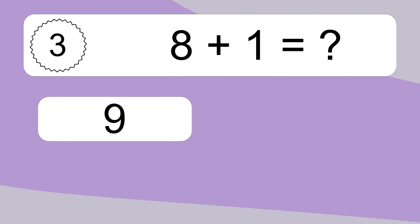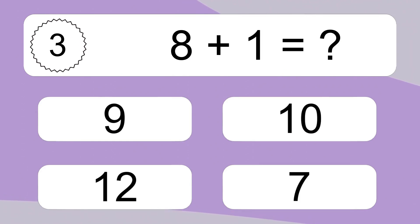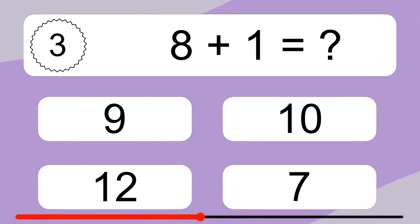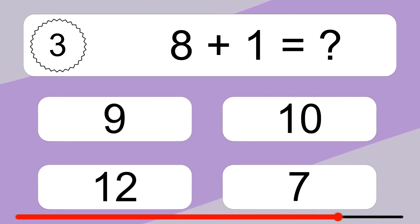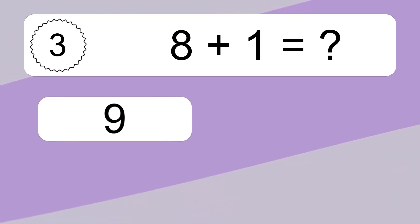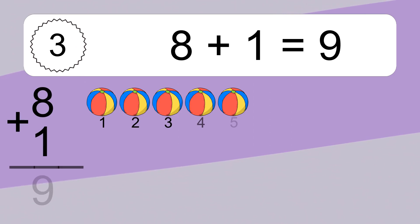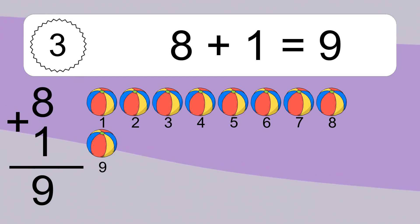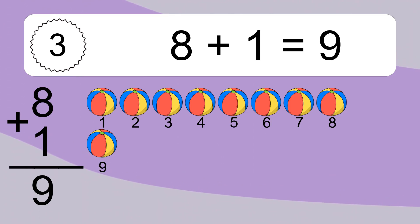8 plus 1 equals what? 8 plus 1 equals 9. Let's count it. 1, 2, 3, 4, 5, 6, 7, 8, 9.